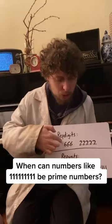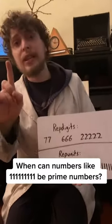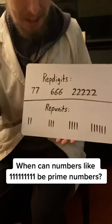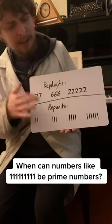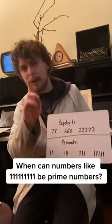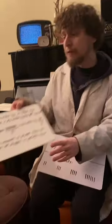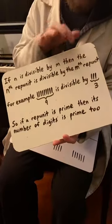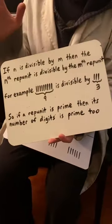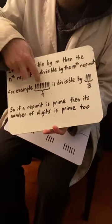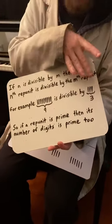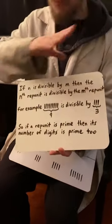Repdigits are numbers composed of just one digit, and repunits are numbers composed of only the digit one. It turns out that if a number n is divisible by a number m, then the nth repunit is divisible by the mth repunit. So you automatically know the one with nine ones is divisible by the one with three ones, just because nine is divisible by three.